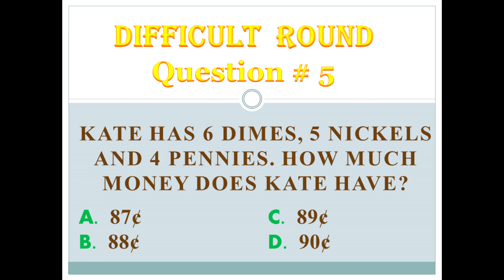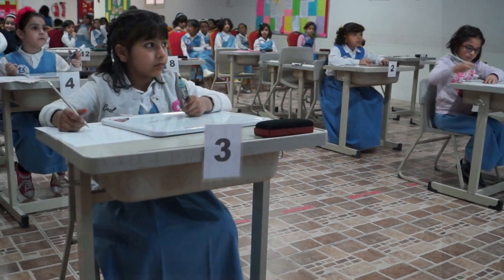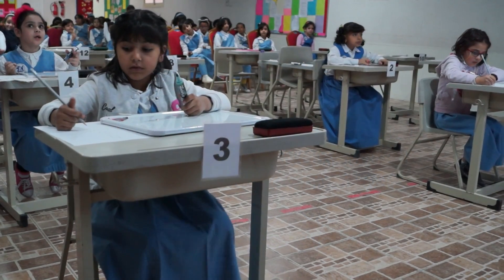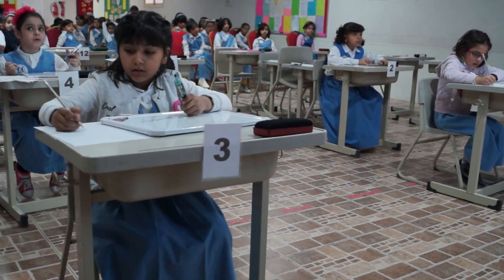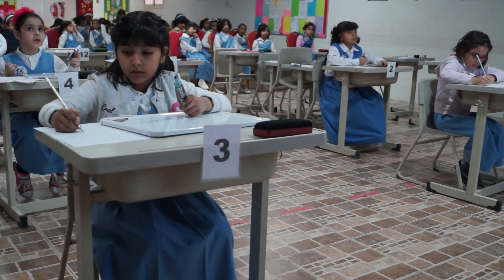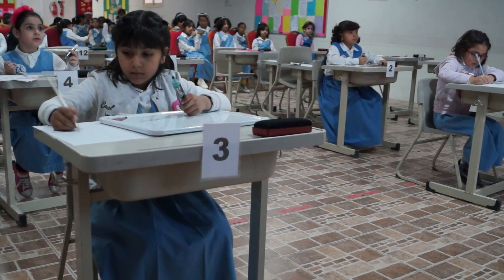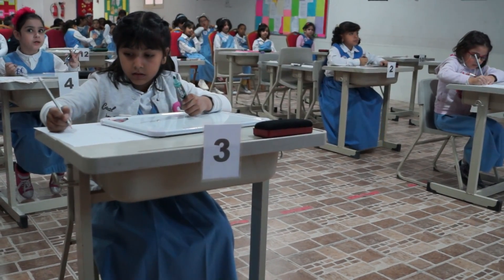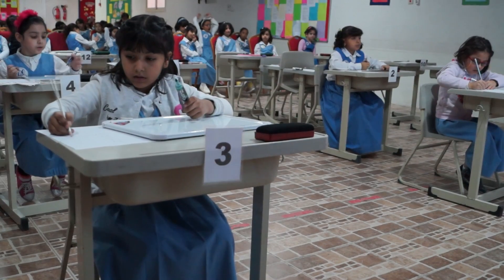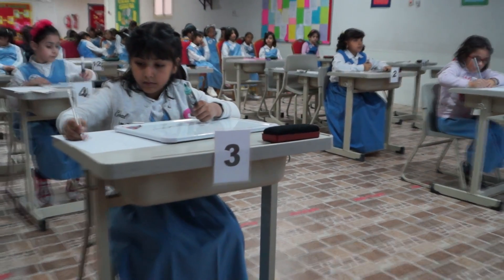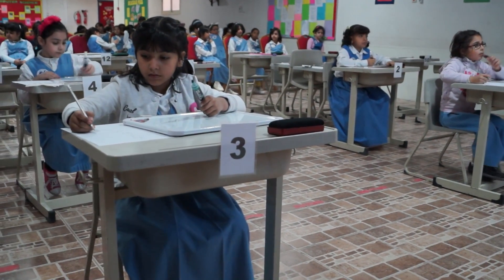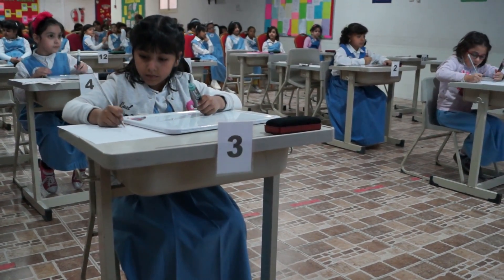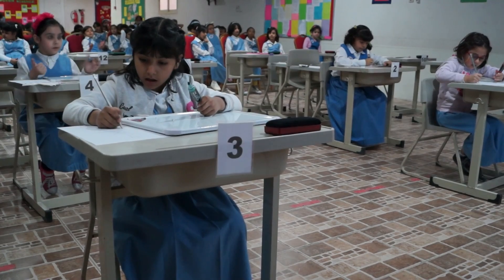A: 87 cents. B: 88 cents. C: 89 cents. D: 90 cents. Again: A, 87 cents. B, 88 cents. C, 89 cents. D, 90 cents. Go.